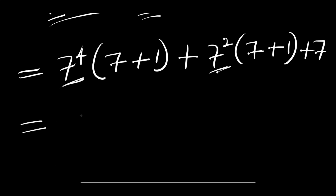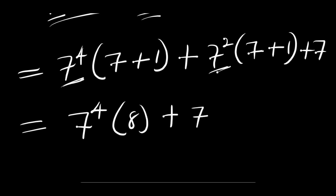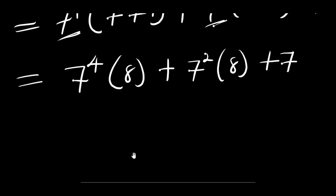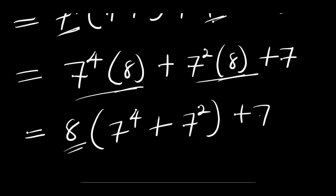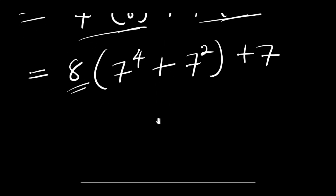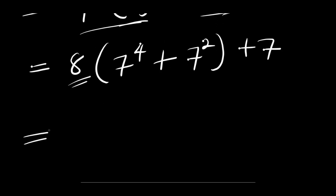We have plus 1, we have plus 1, now we have plus 7. So what do we do? Let's add what we have inside the bracket. We have 7 power 4 times 8 plus 7 power 2 times 8 plus 7. Now we have 7 power 4 times 8 and 7 power 2 times 8, then plus 7.